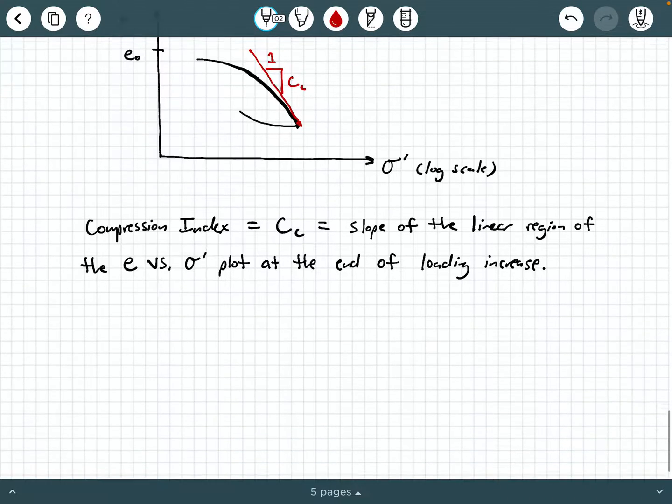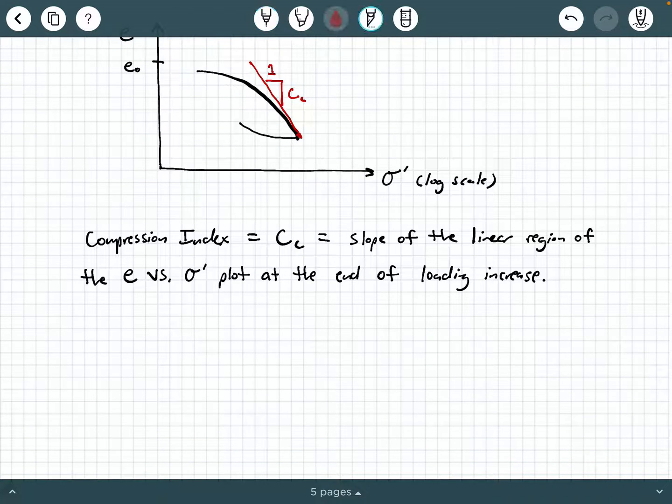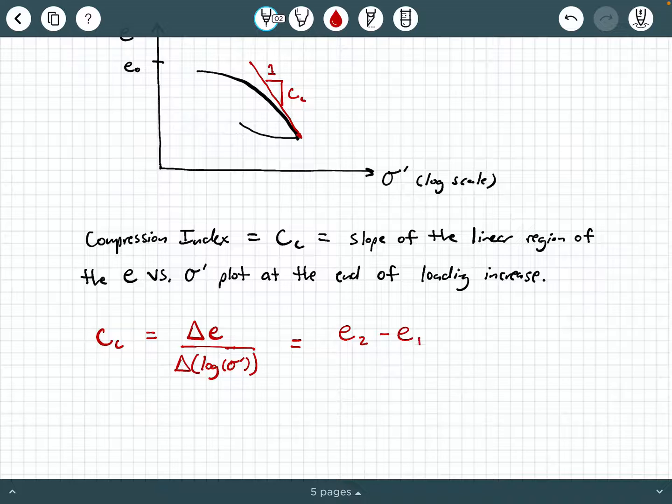Now the way we can calculate that is because it's the slope of that line that's tangent at this point near the end of the loading portion, we can say that C sub C is equal to the change in void ratio divided by delta log effective stress. So again, it's a slope of a tangent line. It's really just rise over run. And so we're going to express this as e two minus e one divided by log of sigma prime one minus log of sigma prime two.